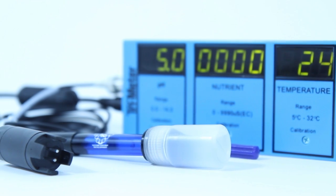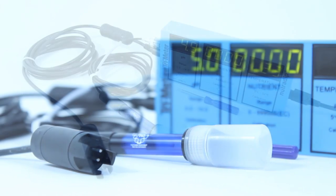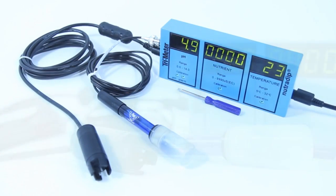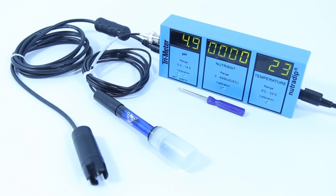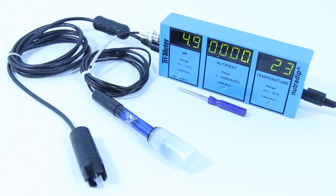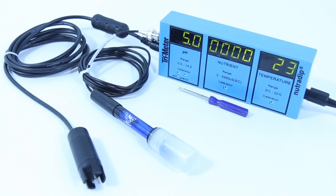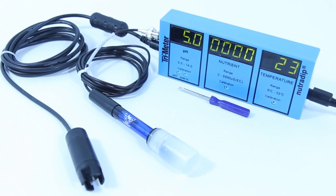The NutriDip Trimeter is the ideal tool for every grower using a central reservoir to feed their plants. The continuous readout allows ultimate control and a quick response to a fluctuating reservoir, particularly useful for systems with recirculating reservoirs.